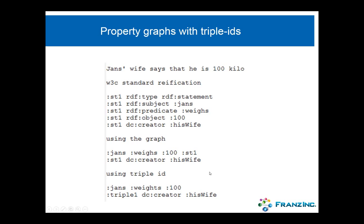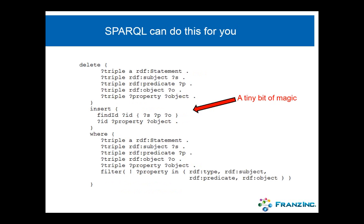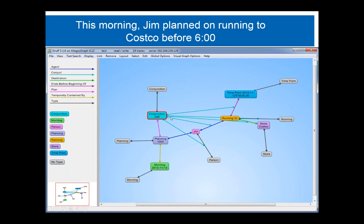Using the graph element for property graphs, we say Jans weighs 100 for statement one, and statement one has creator his wife. Using the triple ID, we say Jans weighs 100 kilos, the unique ID of this triple is triple one, and triple one has creator his wife. So now you're free to use the fourth element for whatever you need. We have a customer that uses this extensively to do property graphs on the ID. When he wants to exchange data with other people, he exports as classical W3C reification, then reads it back and converts using a SPARQL update.